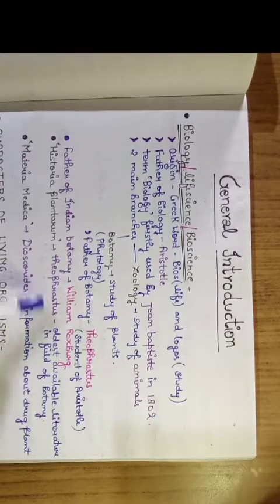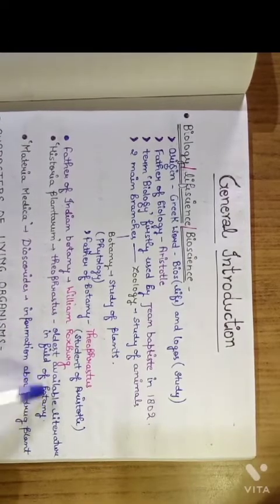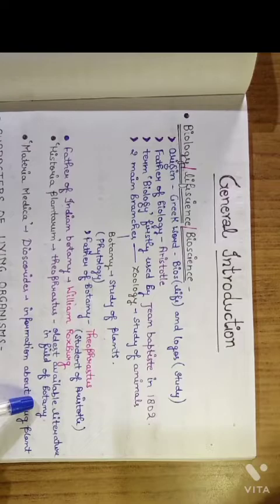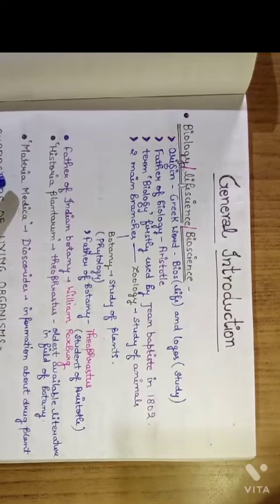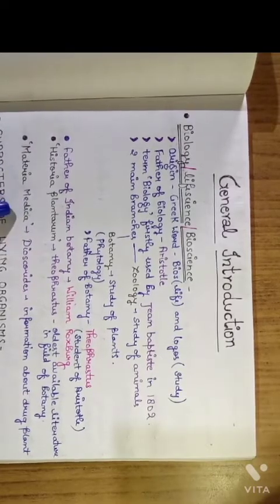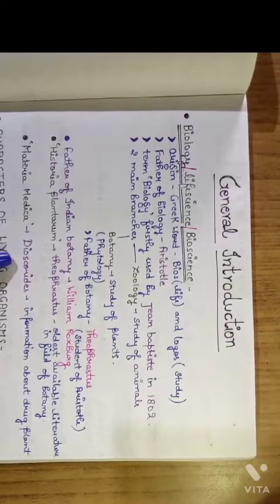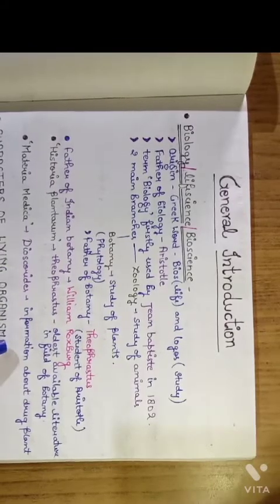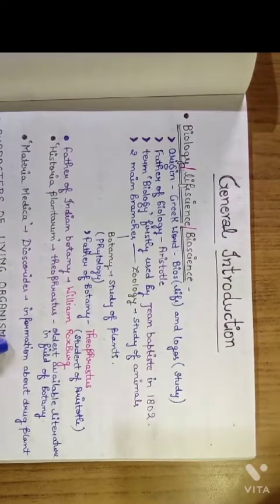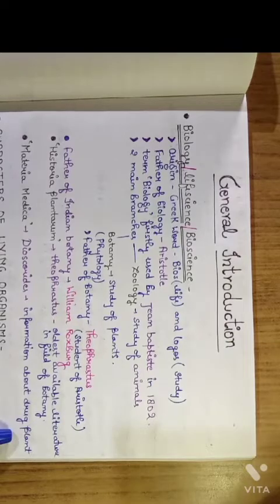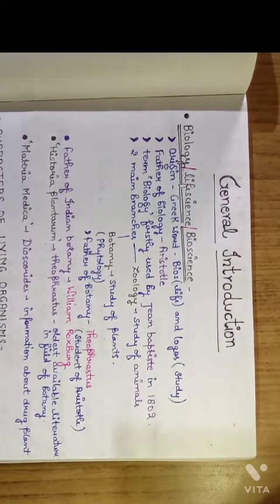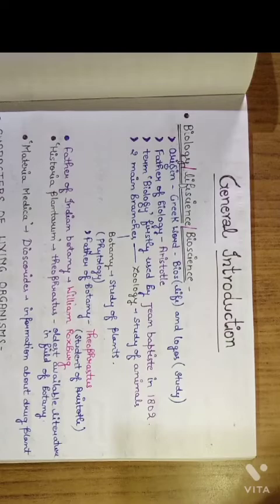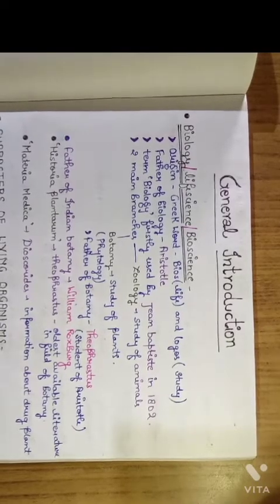There is a book, Historia Plantarum, which was written by Theophrastus. This is the oldest available literature in the field of botany. There is another book, Materia Medica, written by Dioscorides, in which he gave information about drug plants.